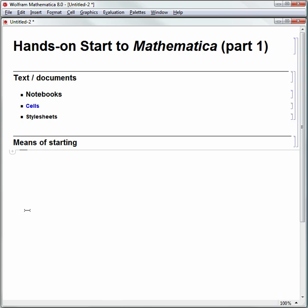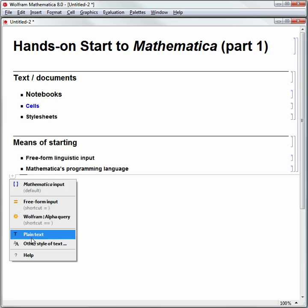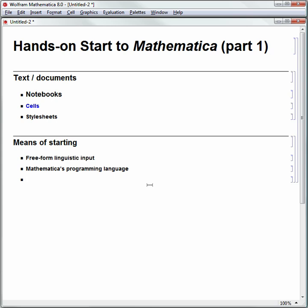I'm going to call this first subsection Free Form Linguistic Input. So there's three means of getting started in Mathematica 8. One is this Free Form Linguistic Input. Number two, I'll hit Alt-5 and say Mathematica's Programming Language. I can hit the down arrow key again to make that horizontal line. I'll go to the Cell Insertion Assistant, make that a subsection, and I'll call the third one Use of Palettes. I'm going to move my arrow key back up under Free Form Linguistic Input.